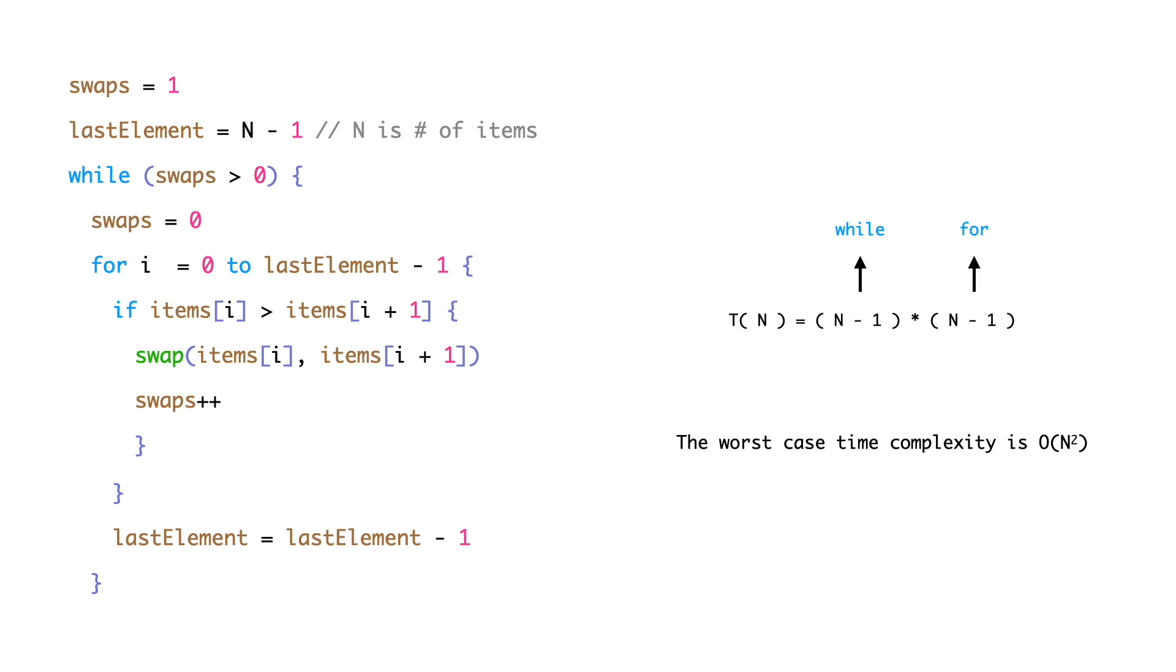The best case occurs when the array is already sorted. In that case, the program executes for one iteration only.